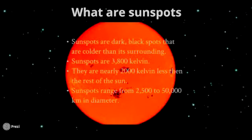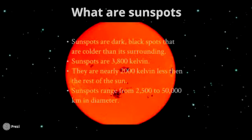They are nearly 2,000 degrees Kelvin less than the rest of the sun. Now, the reason why they are black is because of the great difference in temperature between the sunspot and the surface of the sun.